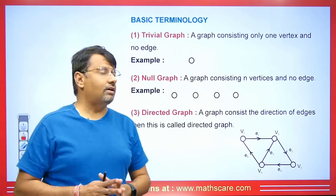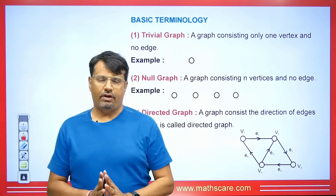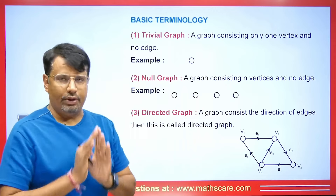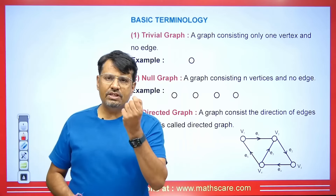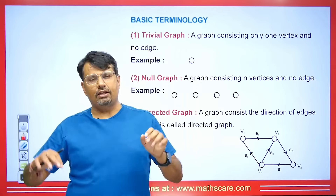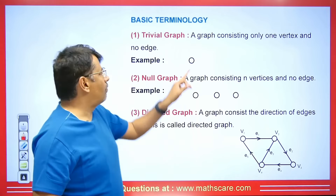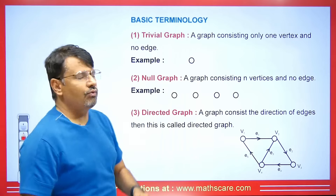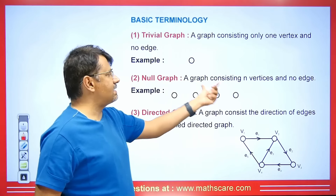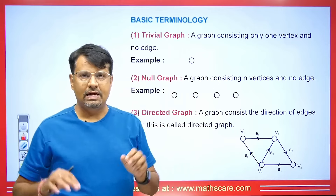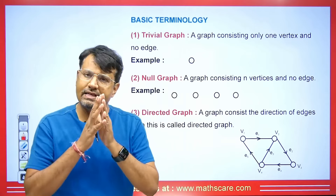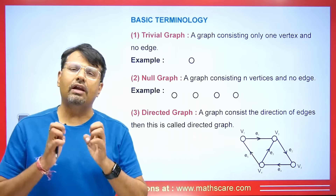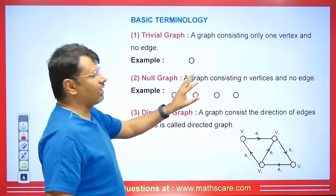Let's talk about basic terminology. First, what is a trivial graph? A trivial graph is a graph consisting of only one vertex and no edges — just a single point. This type of graph is called a trivial graph. Next is the null graph. A null graph consists of n vertices and no edges. There are only vertices and no edges, so no connections are possible. This type of graph is called a null graph.